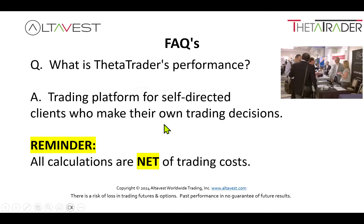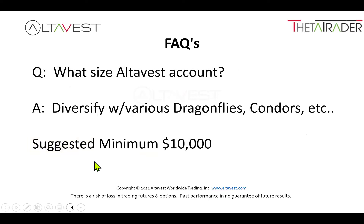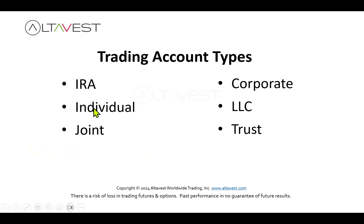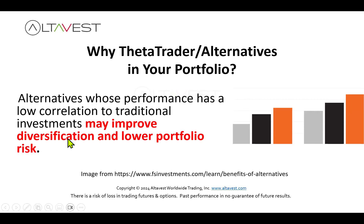ThetaTrader performance: everyone trades differently with a self-directed account, and everyone accepts orders differently, so performance varies. Keep in mind everything is net of all trading costs — everything you saw in ThetaTrader is net of all trading costs. We suggest a minimum account size of $10,000. We can accommodate IRAs, individual, joint, corporate, LLC, and trust accounts. Why would you even consider ThetaTrader? It may improve diversification and lower portfolio risk, simply because this is an alternative investment with a low correlation to traditional investments. ThetaTrader is our technology, built and designed for our clients, integrated with your AltaVest trading account.